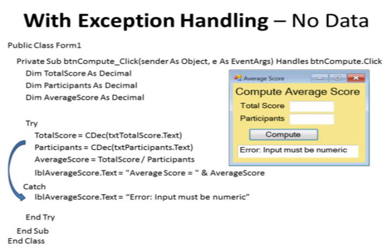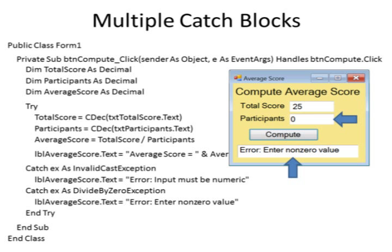If there is an error, we will end up catching the error. As soon as the error is detected, the code inside the try block jumps over to the catch section. We put out a message saying error — input must be numeric. We can also have multiple catch blocks so we can detect different errors and have different things happen in each catch block. In this example, whether no data was entered or a divide by zero is attempted, we still get the error: input must be numeric.